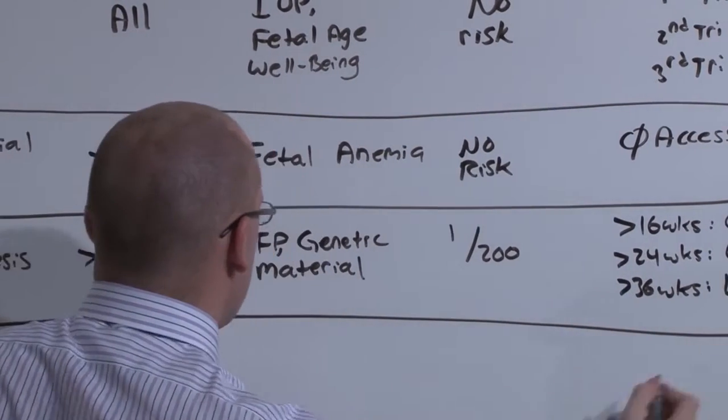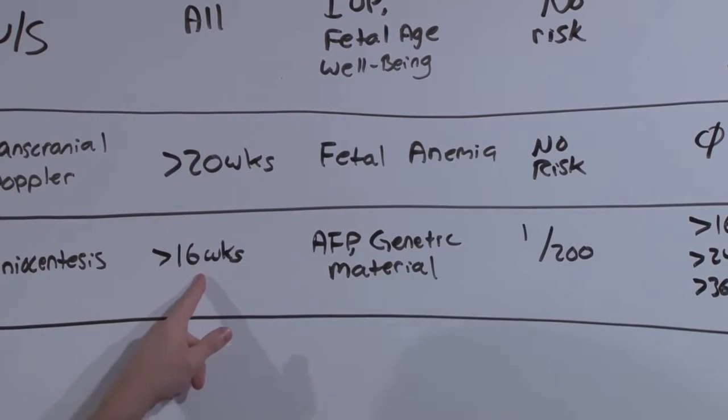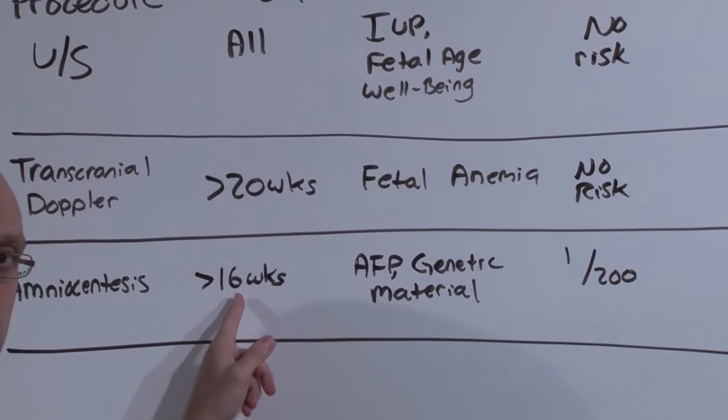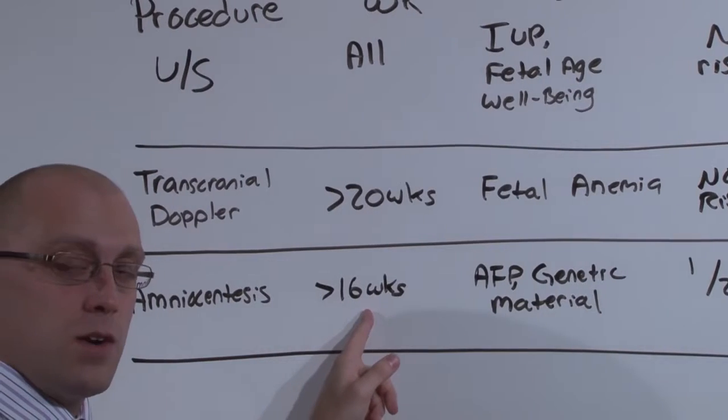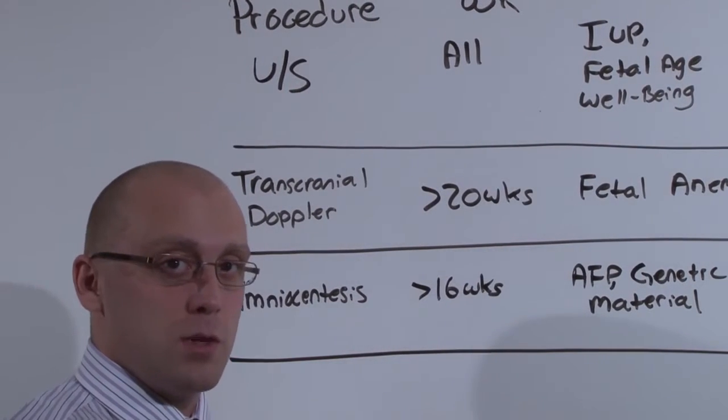But the problem with amniocentesis is that it's in the second trimester. And to do an elective abortion in the second trimester involves a suction curettage. The fetus has already begun to develop, and it's very difficult to do, and there's high risk to mom.